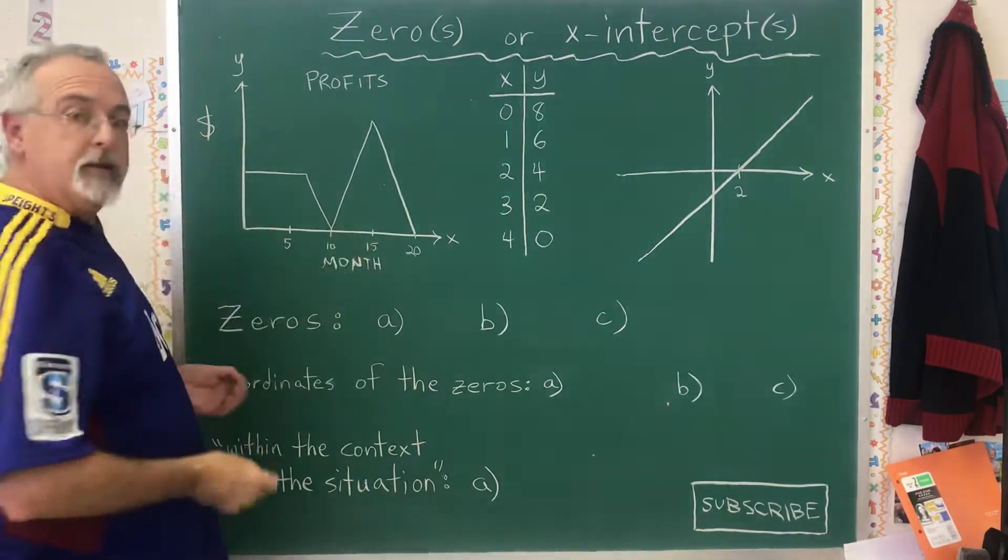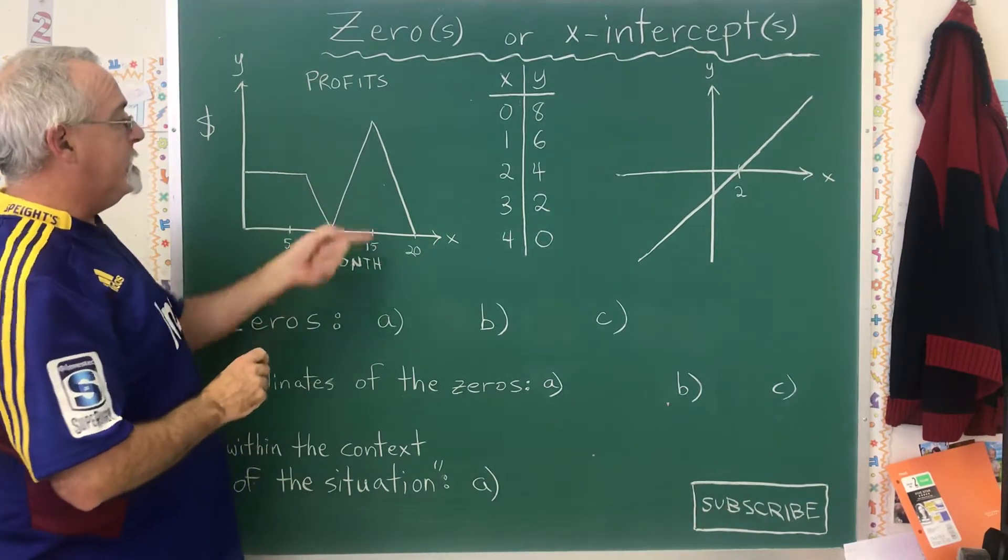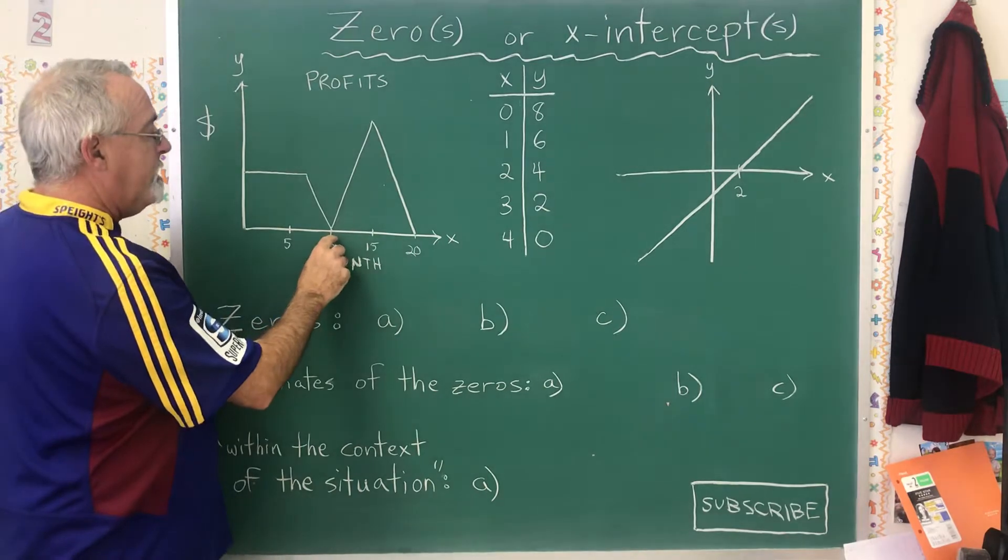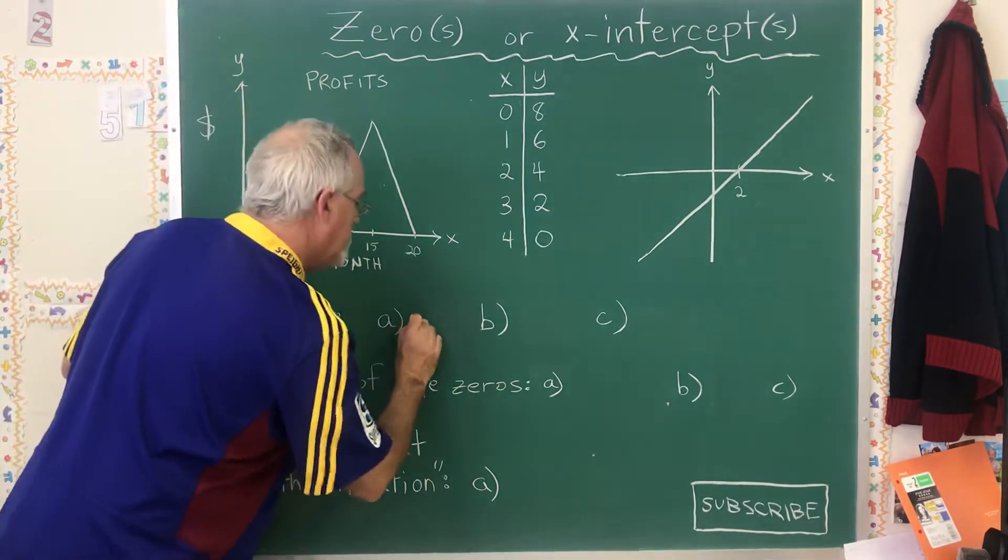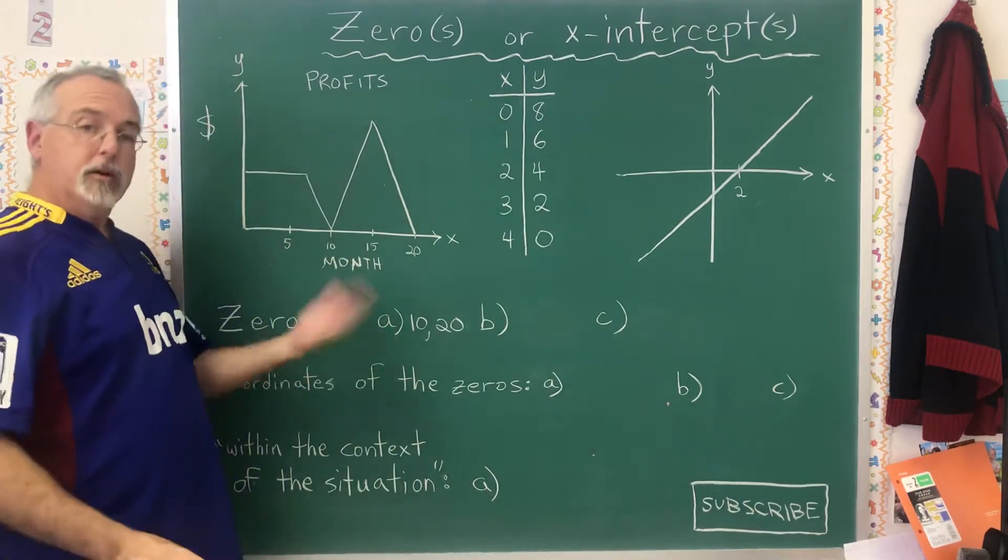So with the graph you can see that easily. There are two points where this graph intercepts the x-axis, and they are at 10 and 20. So those are my zeros. Those are my x-intercepts.